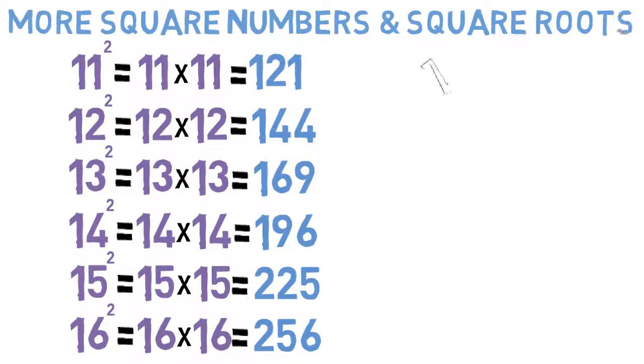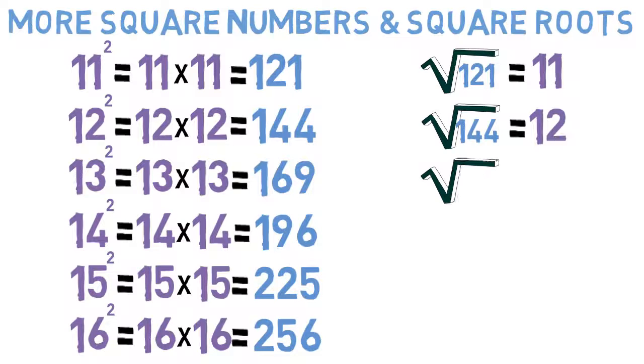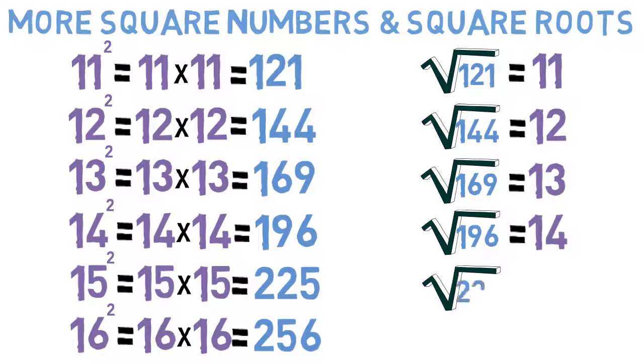Remember that when you take the square root of any square number, the result is the number you started with. That is, the number which, when multiplied by itself, produces that square number.